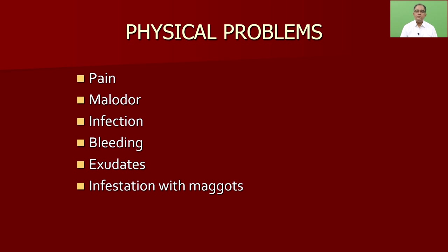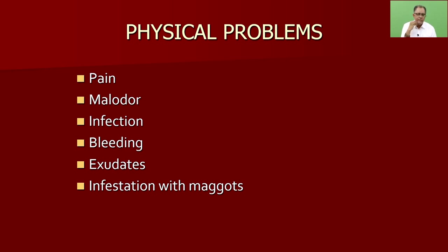The physical problems in a malignant wound could be pain, malodour, infection, bleeding, exudates, and infestation with maggots, which is horrible. Maggots are basically house fly larvae — flies sit on the malignant wound, lay eggs, the eggs hatch into larvae, and those small larvae start feeding on the dead tissue and burrowing within the wound. There is a lot of bad smell, and socially this is unacceptable — you can see the larvae slipping out and falling out. It looks and feels terrible, but all of this can be prevented as well as treated.